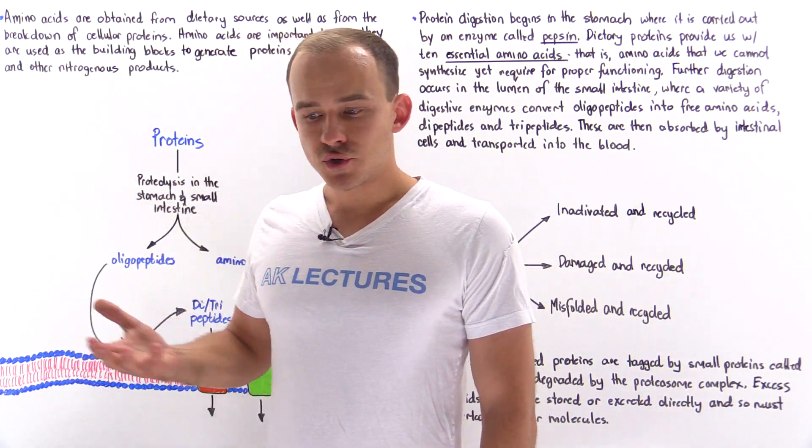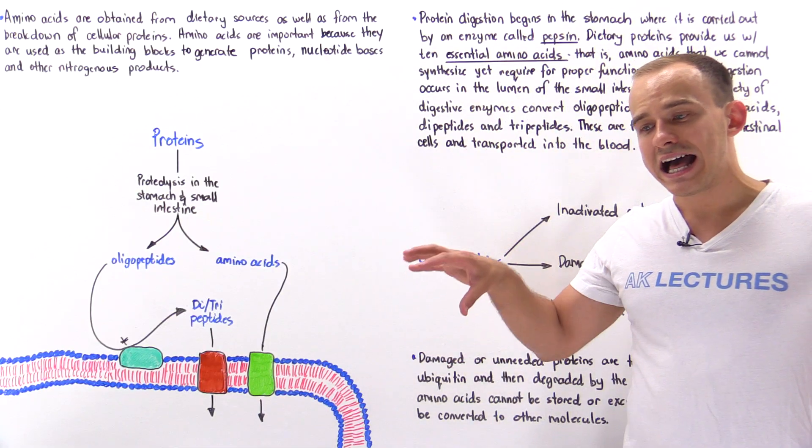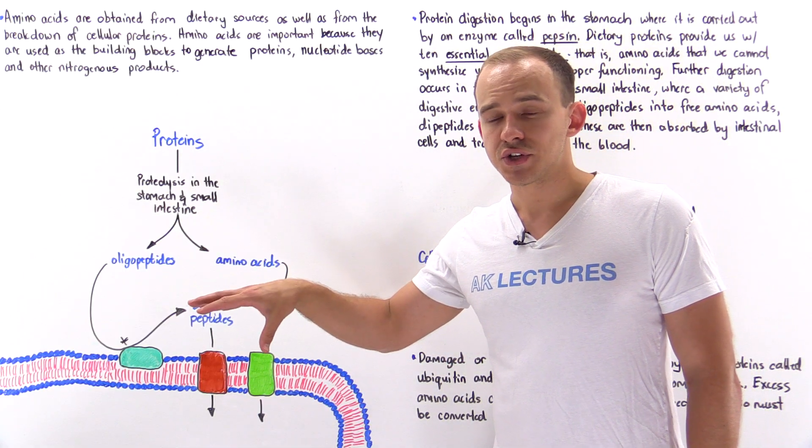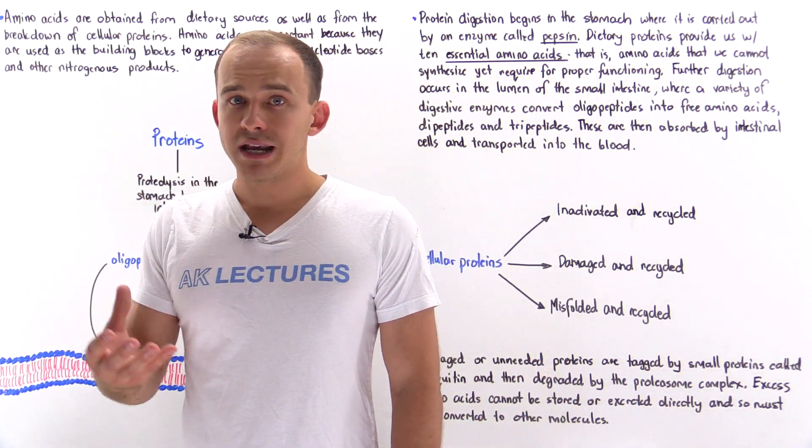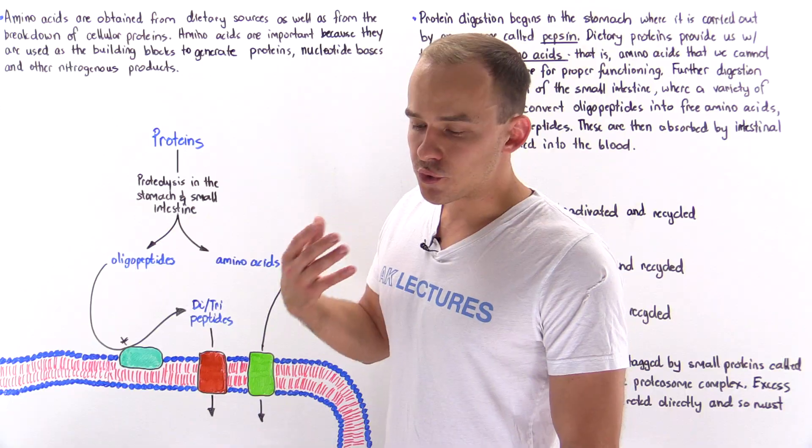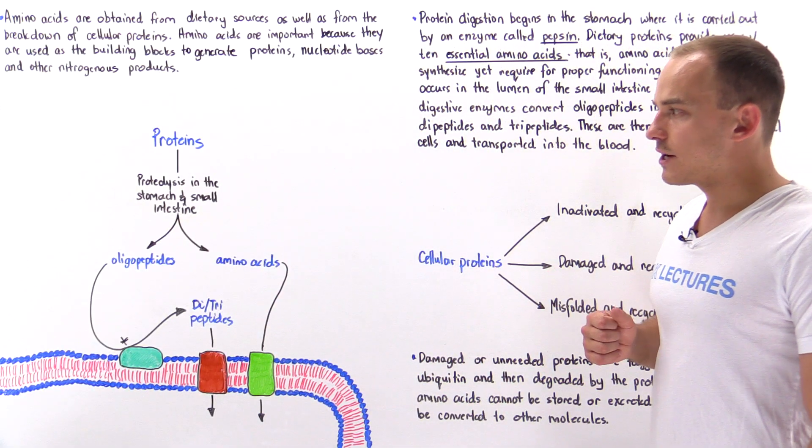As we'll discuss in a future lecture, these amino acids are broken down into carbon skeletons as well as nitrogen-containing molecules like ammonia, in a process known as urea. We'll talk about this in much more detail in a lecture to come.